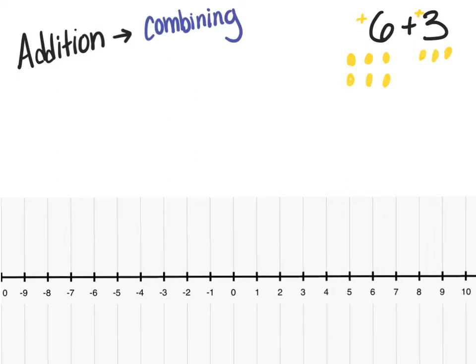I can show 6 plus 3, put them all together, and count how many total counters I see. I see 9 positive — I combine them to get a total. This can also be modeled on a number line. If I start at 0, I can first make a hop of 6 to show my first addend. From there, I'm going to combine with the next number and make another hop of 3 more, and I can see I still land at positive 9.